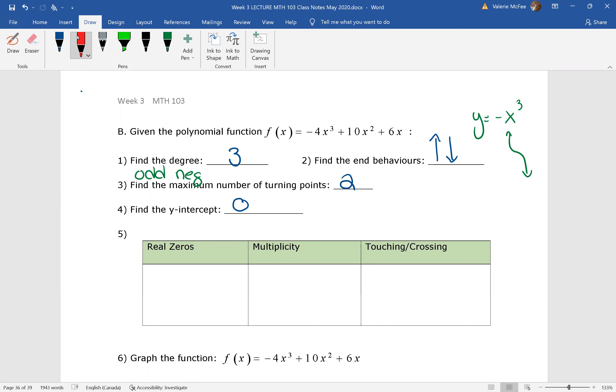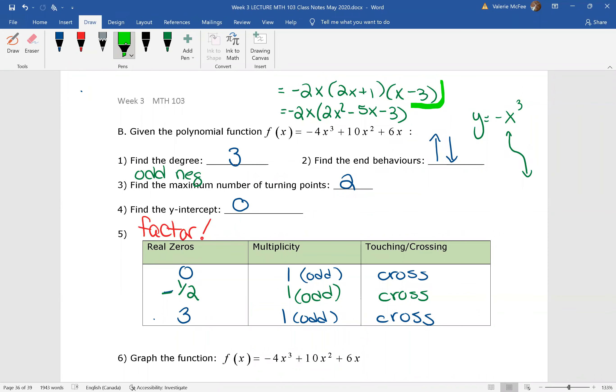Now remember, when you're asked to find the real zeros, it means you're going to need to factor. So I'd like you to find the real zeros, determine their multiplicity, and whether the graph is touching or crossing at each real zero. Okay, so you've factored the function. You found the real zeros. 0 has a multiplicity of 1, negative 1 half has a multiplicity of 1, and 3 has a multiplicity of 1. These are all odd multiplicity, it means they are all crossing.